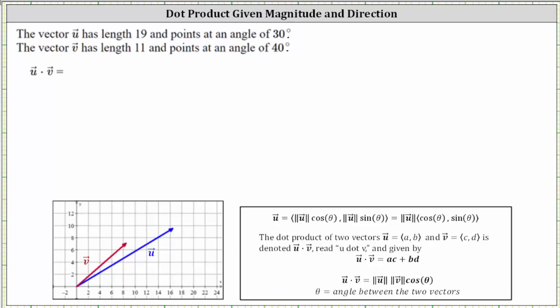The vector u has length 19 and points at an angle of 30 degrees. The vector v has length 11 and points at an angle of 40 degrees. I've already graphed the two vectors below, where vector u is the blue vector with magnitude 19 and direction 30 degrees, and vector v is the red vector with magnitude 11 and direction 40 degrees.